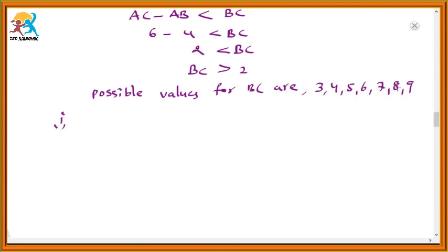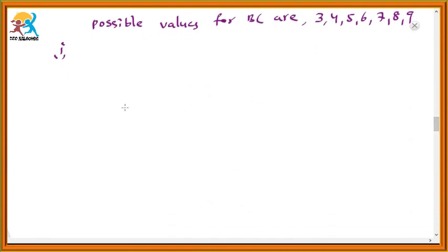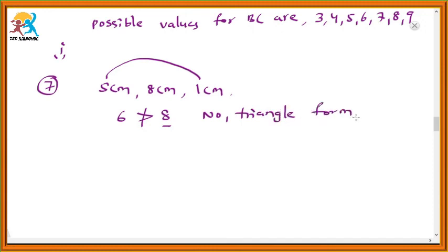And we have one more question: try to construct a triangle with 5 centimeters, 8 centimeters, and 1 centimeter. Is it possible to construct? Can anyone say whether we can draw a triangle with these measurements or not? No. Because the sum of two sides should be greater than the third side, but adding 5 and 1 gives 6, and 6 is not greater than 8. That is why no triangle forms. The reason we have to write: the sum of two sides is not greater than the third side, so we cannot construct a triangle.